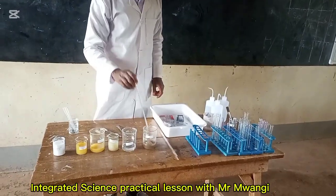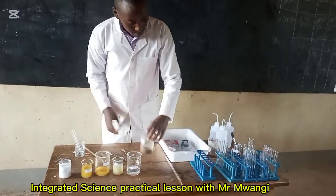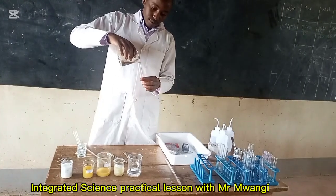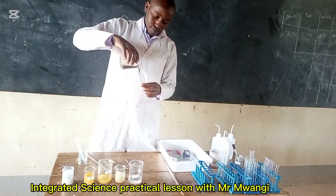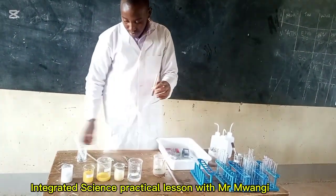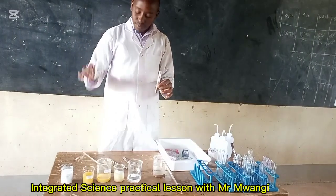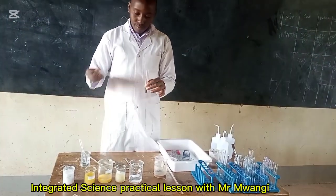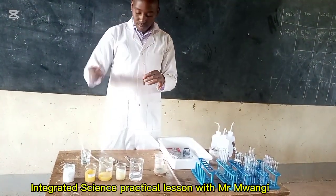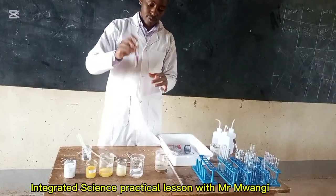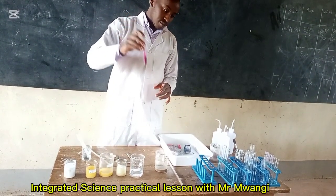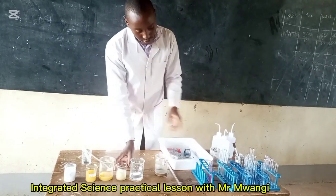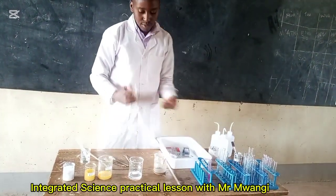I'll pick a test tube and add a little of solution A, then add a few drops of phenolphthalein indicator — which is colorless — using a dropper, and shake a little bit. You'll notice that the color will change to pink, meaning that is a basic solution. That is solution A.